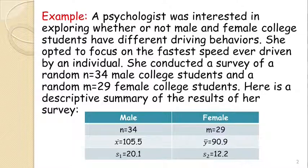The descriptive summaries from the survey are given in the table. For 34 males: x̄ = 105.5, s₁ = 20.1. For 29 females: ȳ = 90.9, s₂ = 12.2.